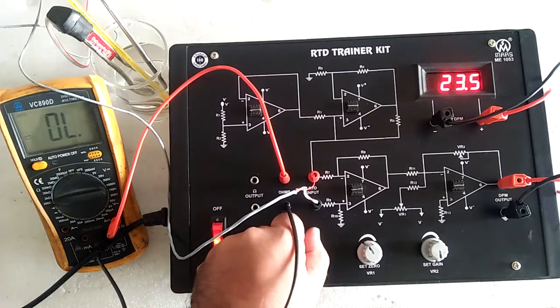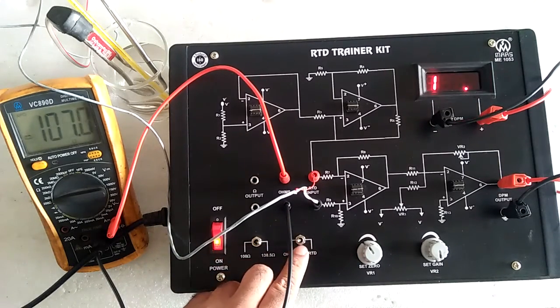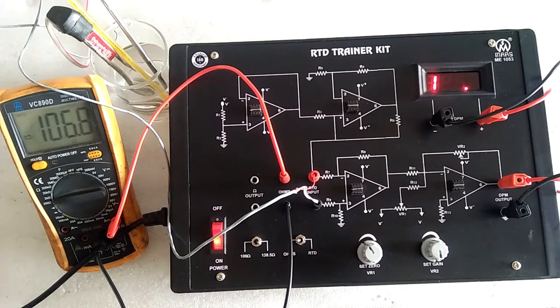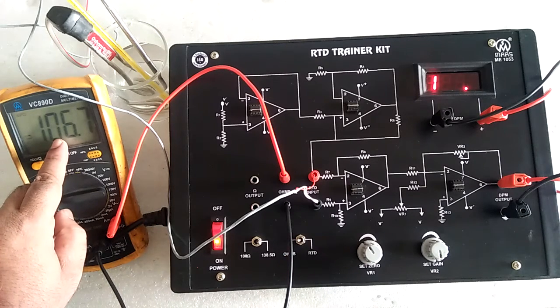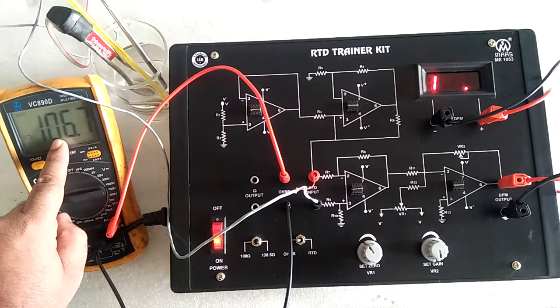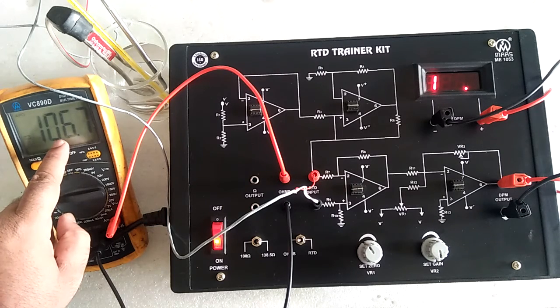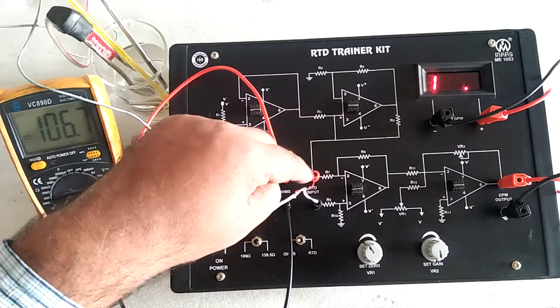When you put this toggle switch to ohm side, this multimeter will display the resistance of the RTD.